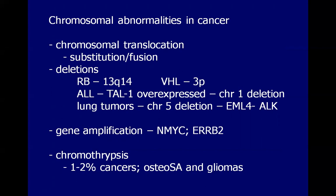ERBB2, also known as HER2, is associated with its activation in 20% of breast cancers and would confer a poor prognosis. Chromothripsis refers to the breaking or shattering of the chromosome with haphazard repair of genes. It is seen in 1 to 2% of cancers, more so in 25% of osteosarcomas and in glioblastoma.